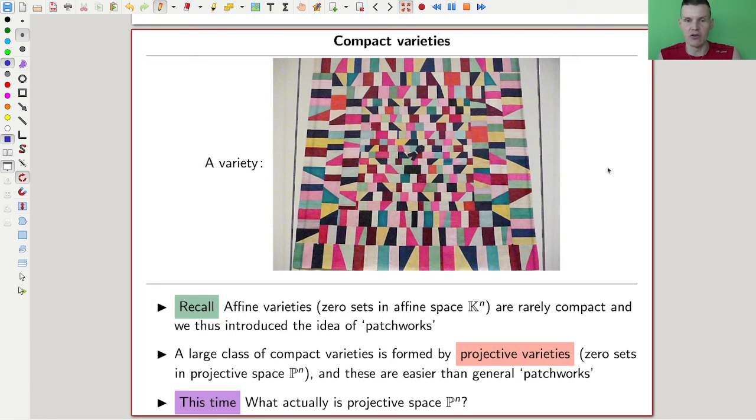Okay, just as a reminder, a variety is a patchwork. And here's my favorite picture of a patchwork. So a variety is something that is patched together from affine varieties.